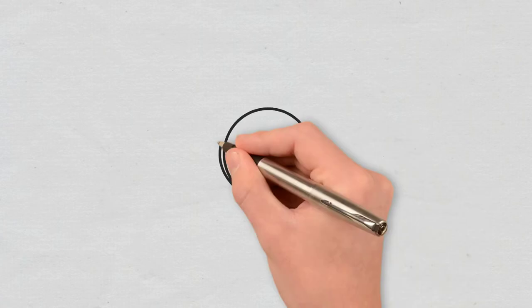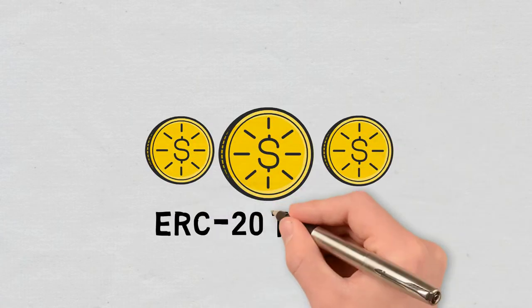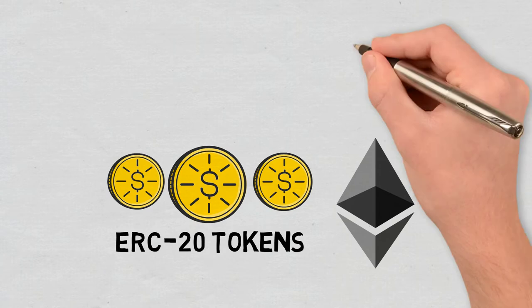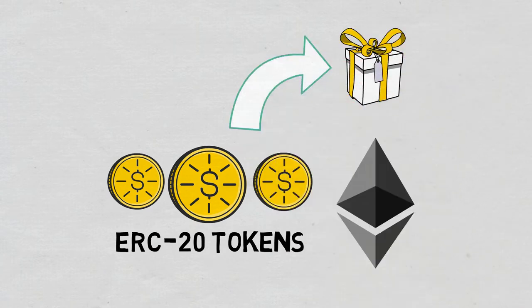Yield farming is typically carried out using ERC-20 tokens on Ethereum, and the rewards are a form of this token.